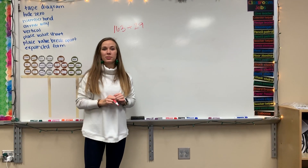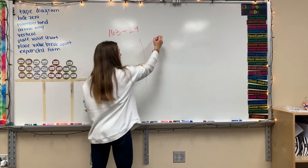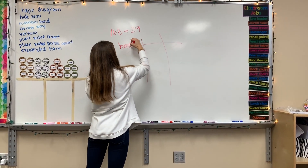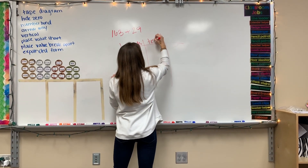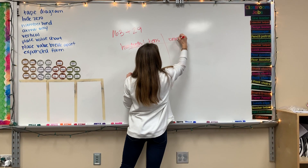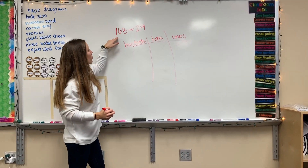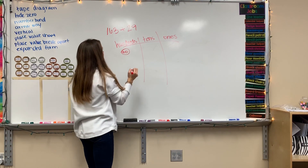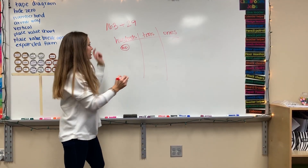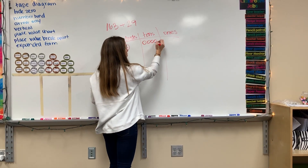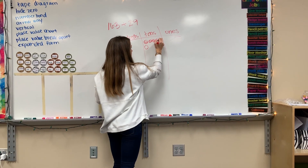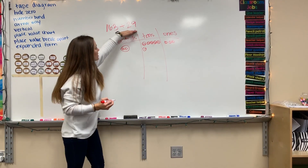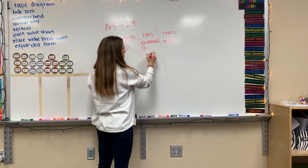The next way is called the place value chart. That's where you'll break it apart and have different place values — hundreds, tens, and ones. I need to break each number apart. For 163: how many hundreds are there? I draw one hundred. How many tens are in 163? There are 6 tens — 1, 2, 3, 4, 5, 6. And there are 3 ones. Then for 29: there are two tens.